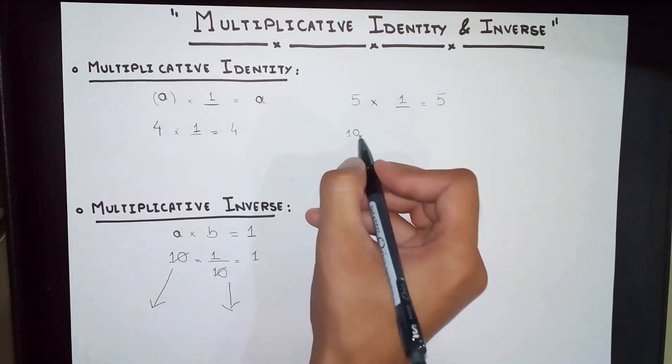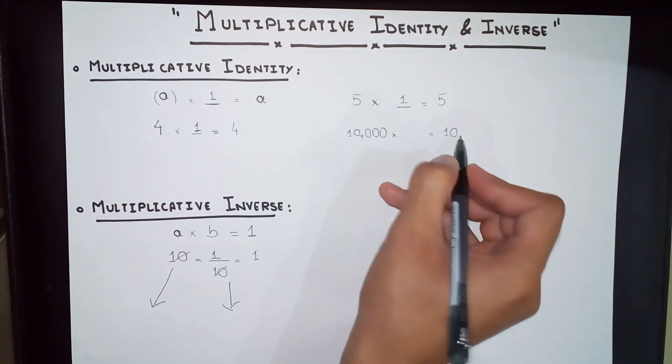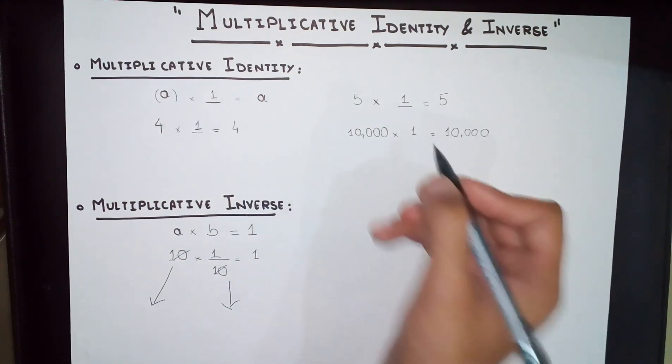Let us say we have 10,000 and we want 10,000 back again. What are we going to multiply that with? 1.